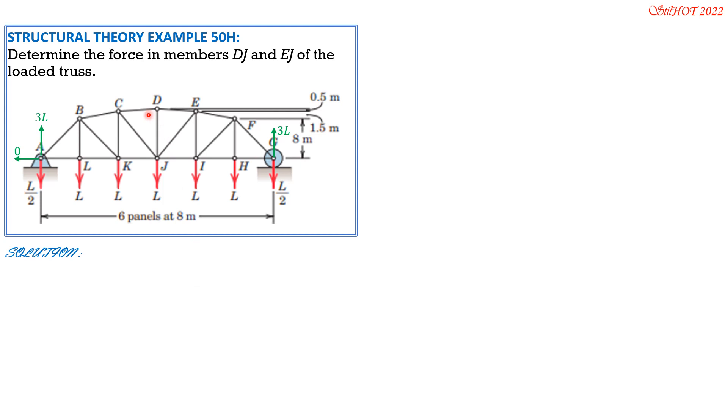So we compute first the angle that CD and DE make with the horizontal, it is arctan of 0.5, vertical distance 0.5 over horizontal distance 8. So tangent theta CD equals tangent of theta DE equals 0.5 over 8. So theta CD equals theta DE equals 3.576 degrees.